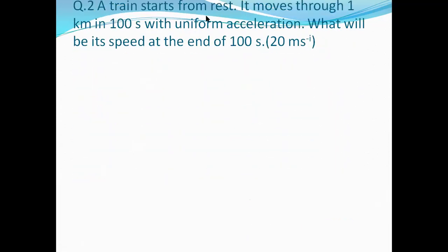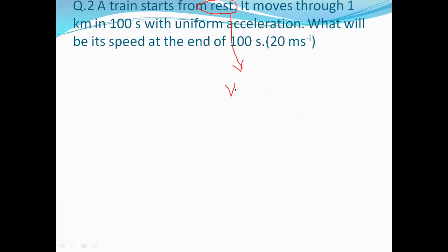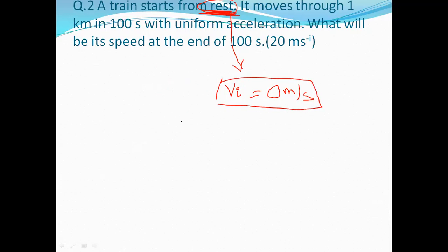Moving on to the next question: a train starts from rest. Whenever you see 'rest' in a problem, assume the initial velocity VI equals zero meters per second. Similarly, if a question says the body 'goes to rest,' the final velocity VF equals zero. Rest means the velocity is zero — the body is not moving at that point.